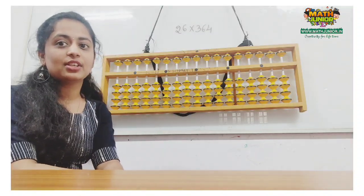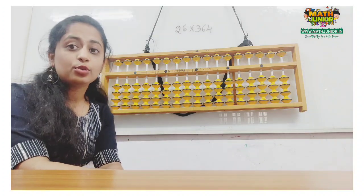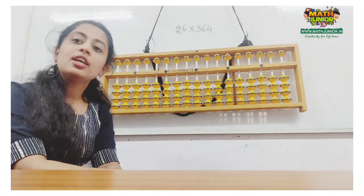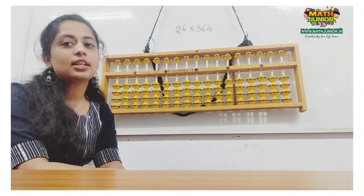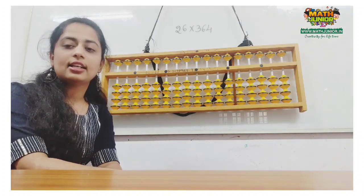Hello students, welcome to Mind Junior. Today I will be explaining how to do 2-digit into 3-digit multiplication using abacus. Let us take one example: 26 into 364.